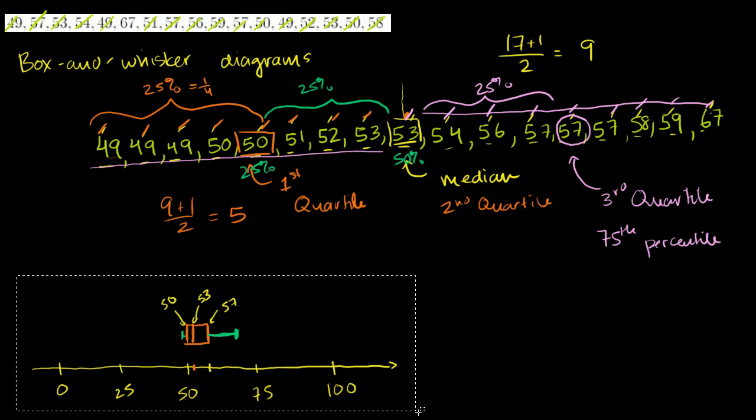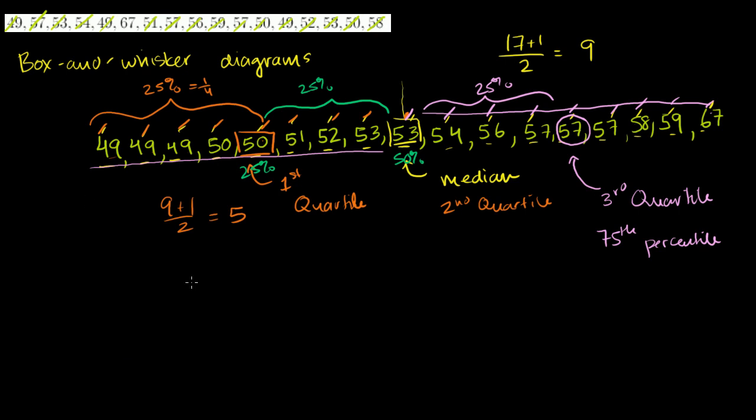Now let me zoom in a little bit, because I realize that this is a little bit all squunched up. So let me change my scale a little bit. Let's say that this right here is 45, 46, 47, 48, 49, 50, going up to 67, 68. So if we use this as our scale, I think it'll be a little bit clearer what's going on with the box and whisker diagram.